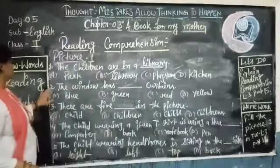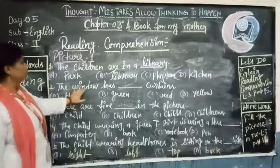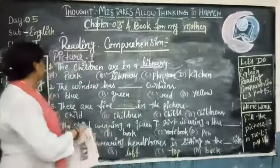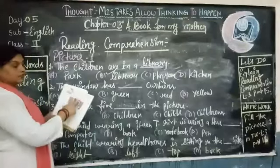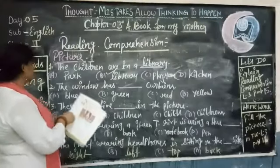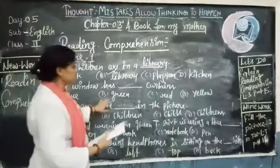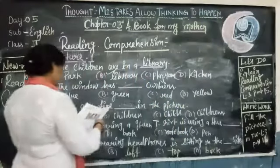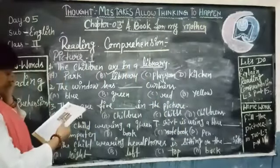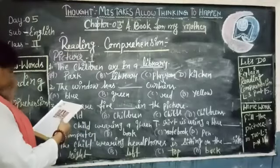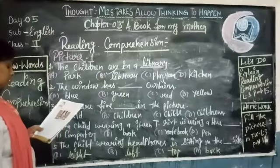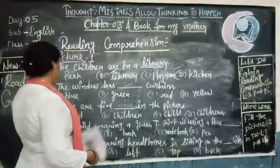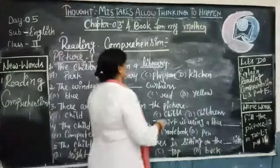Number two: the window has curtains. In the picture, the window has curtains — blue, green, red, or yellow. The right answer is yellow.